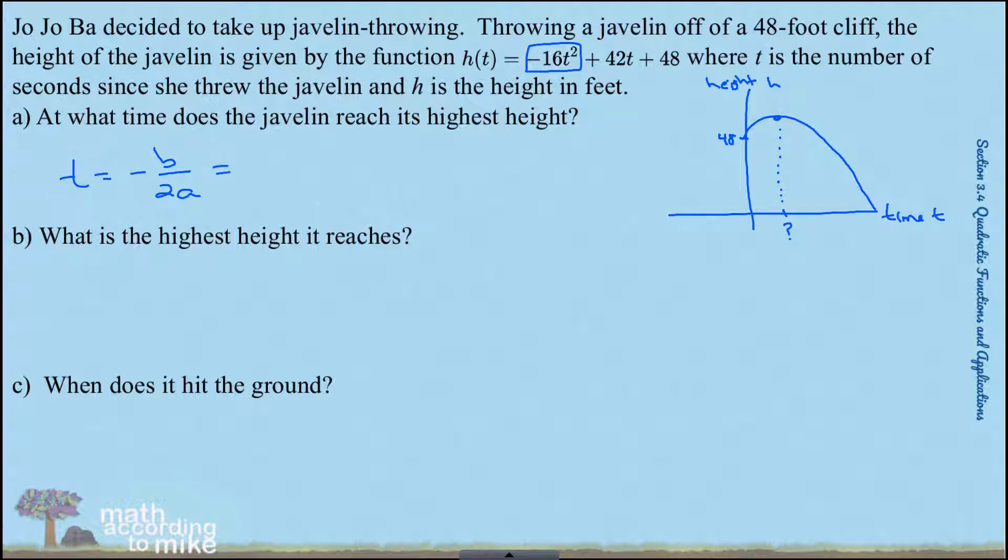Our b is 42 so we'll have negative 42. Our a is negative 16.